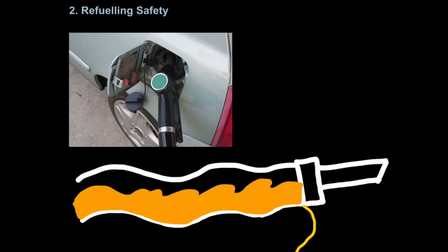Another very important application of our knowledge of static electricity is refueling safety. This is probably something most people don't even think about. But when fuel, which is an insulating material, travels through a filler pipe, which is also an insulating material, there are going to be electrons being transferred between them. So as the fuel is flowing, we get electrons building up in the fuel making it very charged.